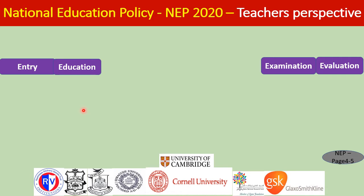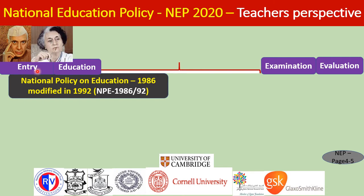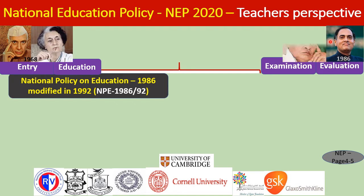The speaker began education in 1968 when the first education policy was introduced, conceived by Jawaharlal Nehru who constituted the Kothari Committee (1964–66). It was introduced by Prime Minister Indira Gandhi in 1968. After 18 years, it was modified by Rajiv Gandhi in 1986, then again after 6 years by P.V. Narasimha Rao in 1992. The present policy comes after a gap of 28 years.